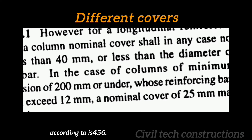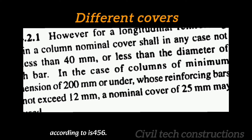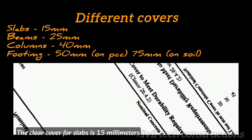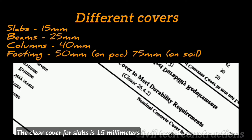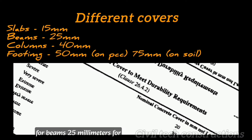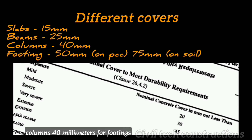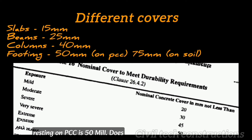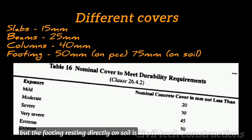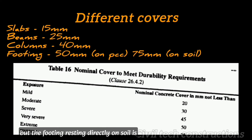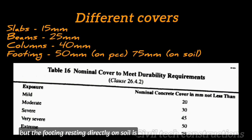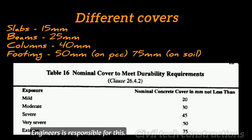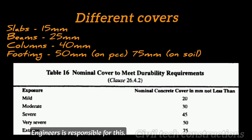Here are the different covers according to IS-456. The clear cover for slabs is 15 mm, for beams 25 mm, for columns 40 mm, for footings resting on PCC 50 mm, and for footings resting directly on soil 75 mm. The site engineer is responsible for ensuring these covers.